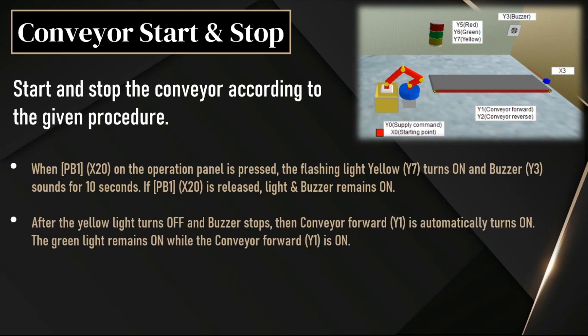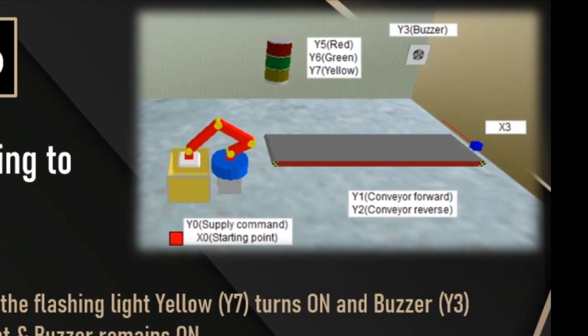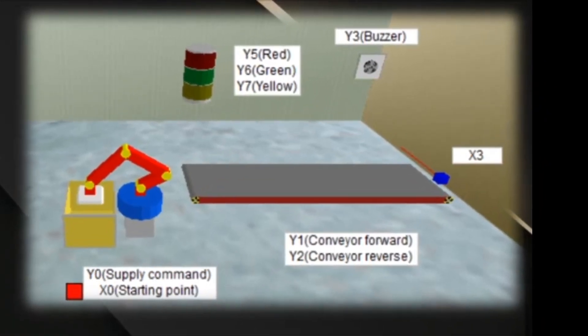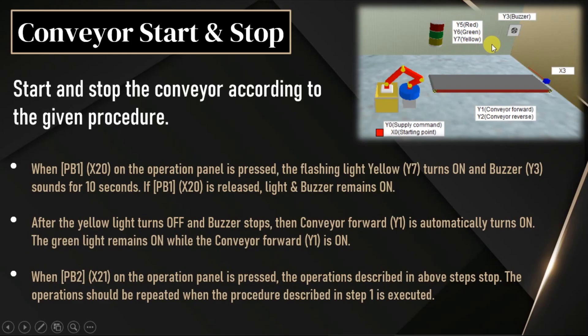After the yellow light turns off and buzzer stops, the conveyor has to start automatically and move in the forward direction. During this time, the green light must be turned on when the conveyor is running. When push button 2 is pressed, the above two steps must stop. We will implement this simple conveyor start and stop logic as per the given procedure.